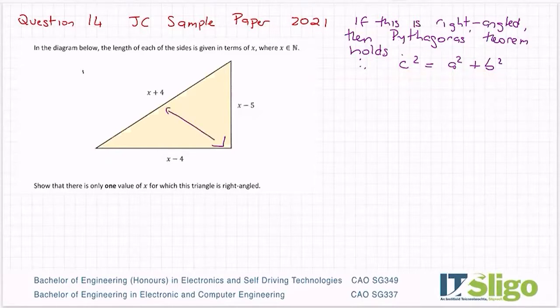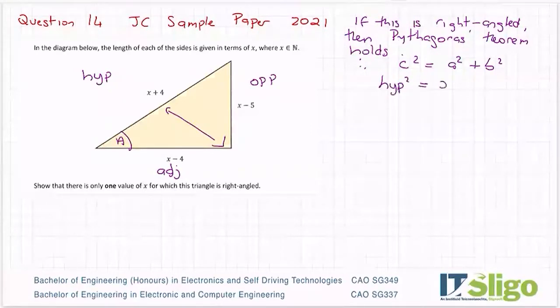Right across from your right angle is always your hypotenuse, always. And that's the important one in Pythagoras' theorem. It actually doesn't mind which one's opposite or adjacent, it doesn't really matter. If I put an angle in here, for example, he would be opposite, he would be adjacent. But it doesn't matter, the one that's important is the hypotenuse. Why? Because it's the hypotenuse squared is equal to the other two sides squared.